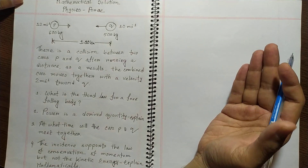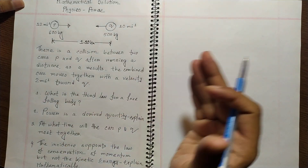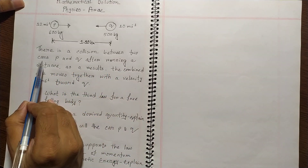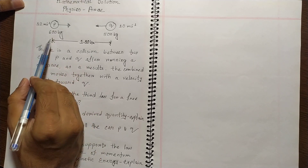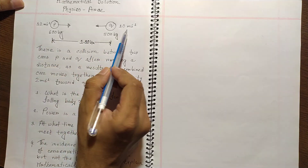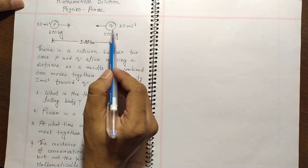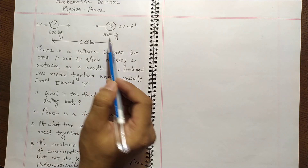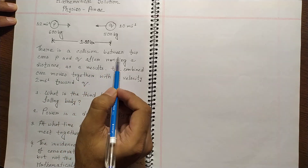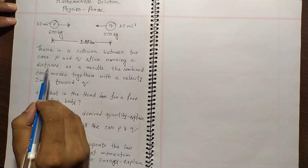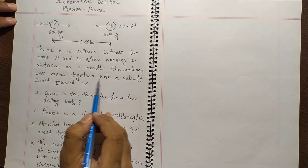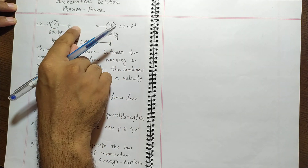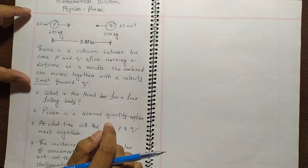Salaam alaikum everyone, welcome to another creative solutions from physics chapter force. There is a collision between two cars P and Q. Car P has a mass of 600 kilograms and is moving at 12 meters per second. Car Q is coming in the reverse direction at 10 meters per second with a mass of 500 kilograms. After the collision, the combined car moves together with a velocity of 2 meters per second towards Q.